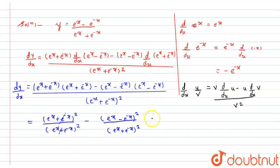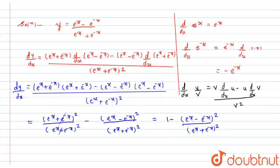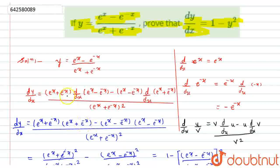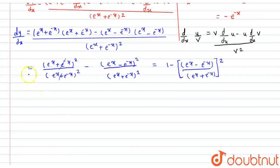Now if I look here, the (e raised to x plus e raised to minus x) squared terms cancel. So I get 1 minus (e raised to x minus e raised to minus x) squared divided by (e raised to x plus e raised to minus x) squared. I can combine their squares directly, and since that squared fraction is nothing but y squared, dy by dx equals 1 minus y squared.